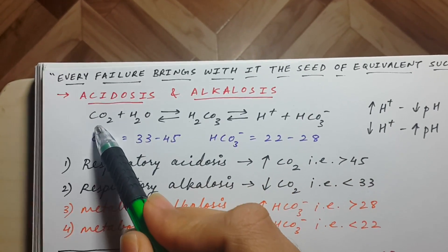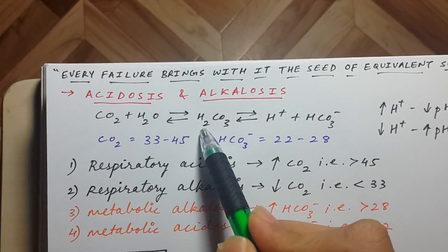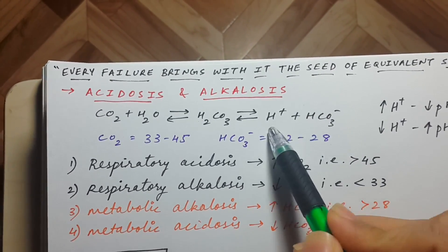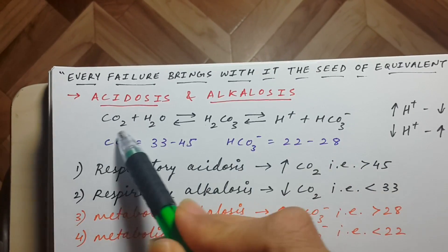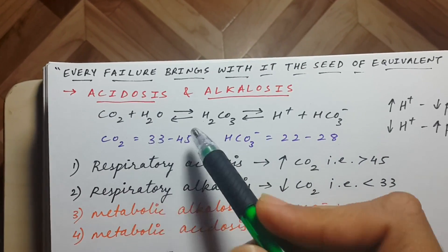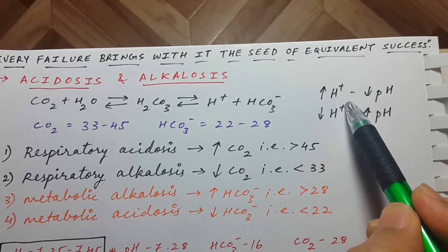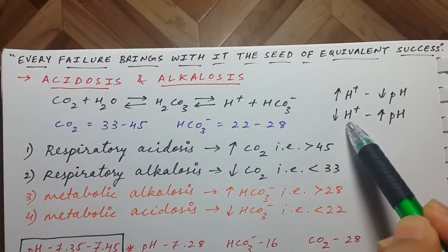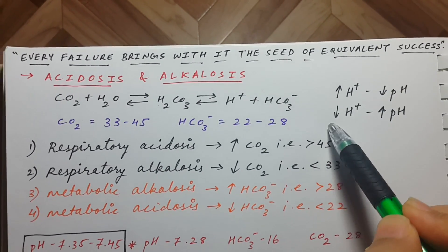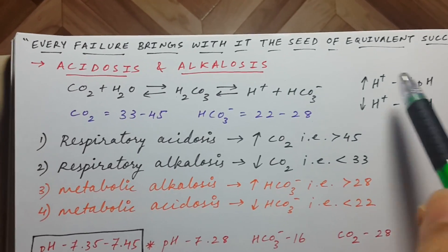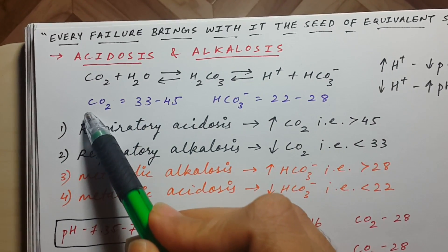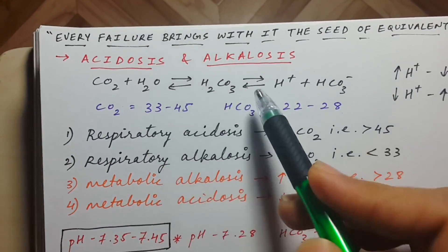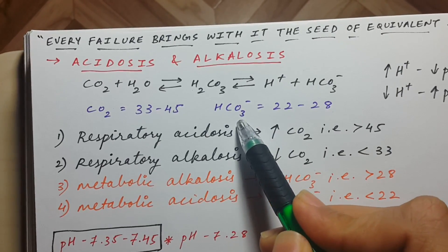Acidosis and alkalosis can be understood through the equation: CO2 + H2O forms H2CO3 (carbonic acid), which then forms H+ and HCO3-. The reaction can also go in reverse. If H+ increases in the blood, that leads to acidosis; if H+ decreases, that leads to alkalosis. The normal value of CO2 in the blood is 33 to 45, and the normal value of HCO3- is 22 to 28.